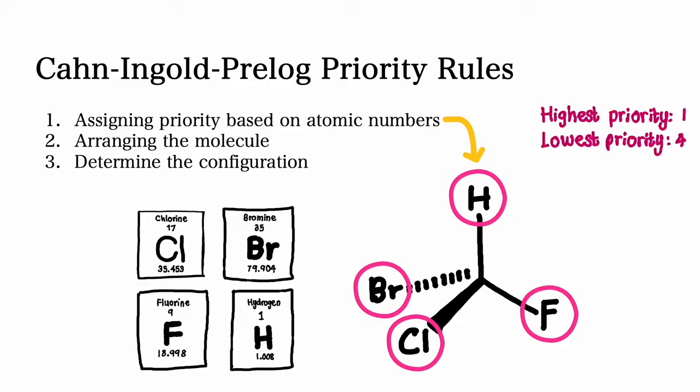The substituent with the highest atomic number is given the highest priority which means it's assigned number one and subsequently so you assign number two, three and four.